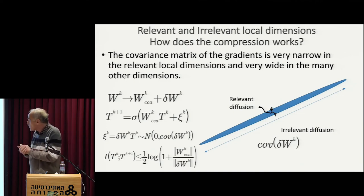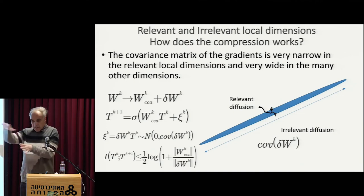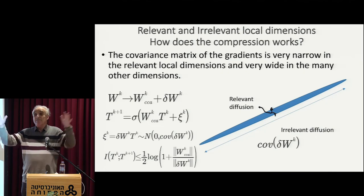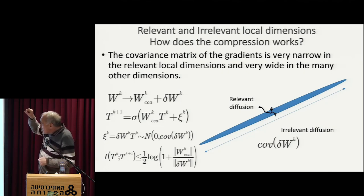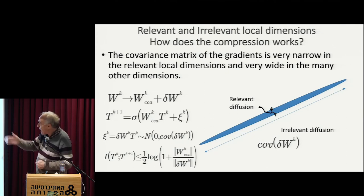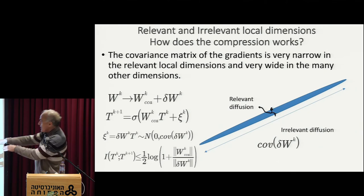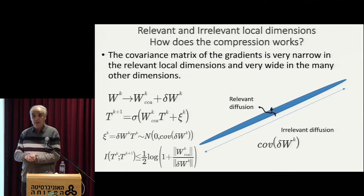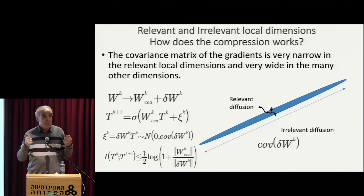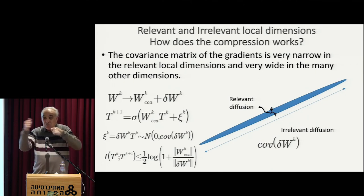This random walk eventually looks like noise in high dimension — because it's an integrated noise which eventually accumulates like a Gaussian, like a Wiener process. So each weight gets essentially noise as a component of the weight. This noise or diffusion process has a very non-uniform covariance matrix — it is very wide in what we call the irrelevant dimensions of the data, which are most of the dimensions.